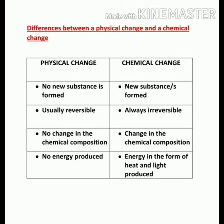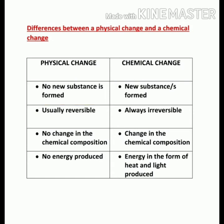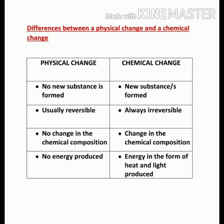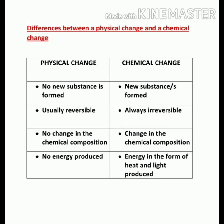Let's discuss the differences between a physical and a chemical change. In a physical change, no new product or substance is formed. But in a chemical change, a new substance or substances are formed. A physical change is usually reversible — you will get back the original substance. Whereas in a chemical change, it is always irreversible — we can never get back the original substance from the new substance.